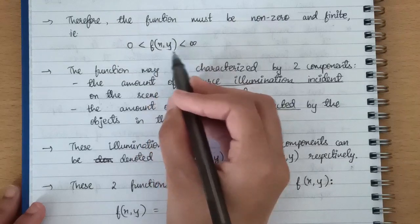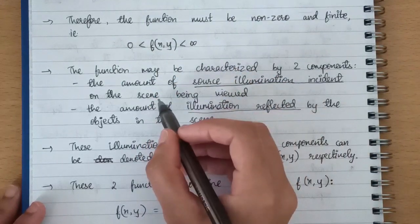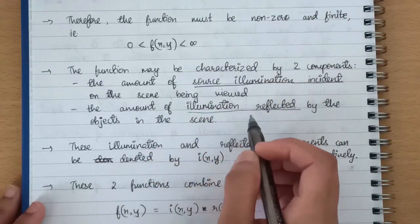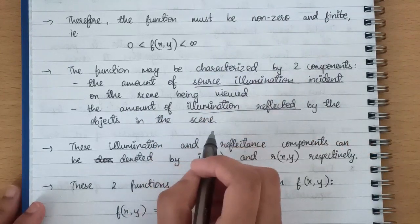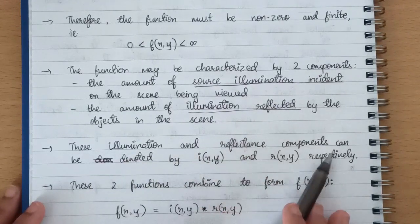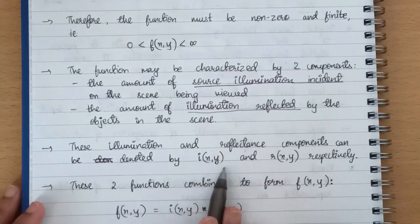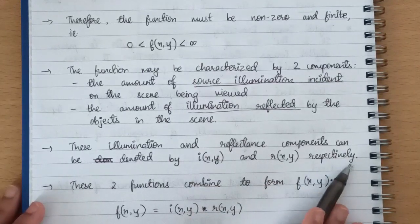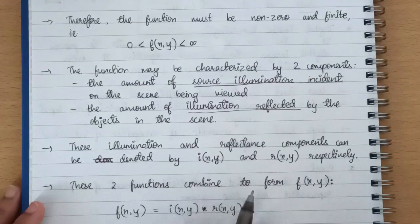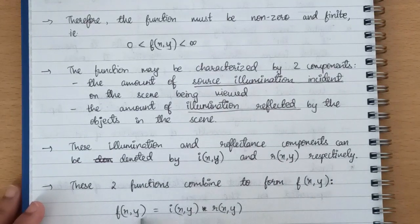Now the two factors which affect the formation of an image are the amount of source illumination incident on the scene and the amount of illumination reflected by the objects in the scene. These illumination and reflectance components can be denoted by i of x comma y and r of x comma y respectively. So these two functions combine to form f of x comma y where f of x comma y is equal to i of x comma y times r of x comma y.